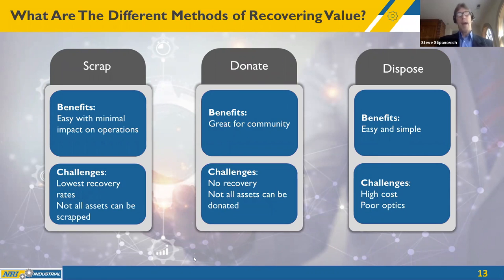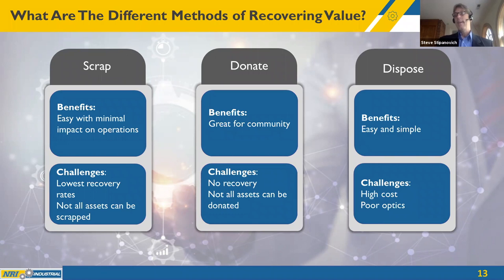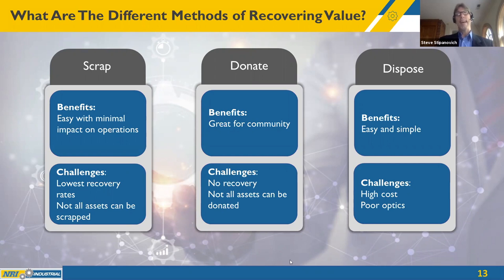Other options include scrap — easy but the least profitable. Without an asset recovery plan, this is the most common method: plant and storeroom personnel take the path of least resistance and throw obsolete parts in the scrap bin. Donate: give material to a non-profit — IRS code 170(e)(3) allows a very generous tax benefit in certain situations, but not all assets can be donated. Dispose: throw in the dumpster. A warehouse supervisor told me someone could make a living selling parts thrown into their dumpster.